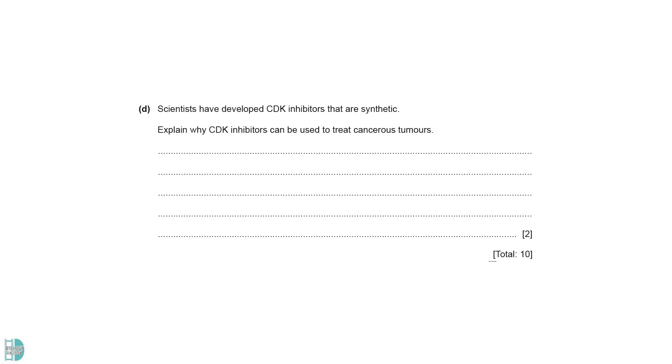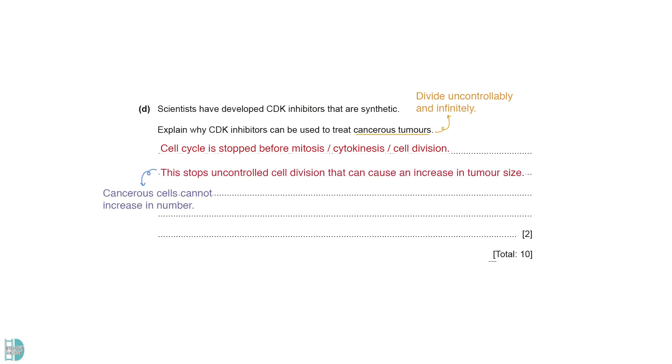Explain why CDK inhibitors can be used to treat cancerous tumors. Cancerous cells divide uncontrollably and infinitely. These inhibitors can stop the cell cycle before mitosis and cytokinesis. This stops the uncontrolled cell division that can cause an increase in tumor size. In other words, the cancerous cells cannot increase in number.